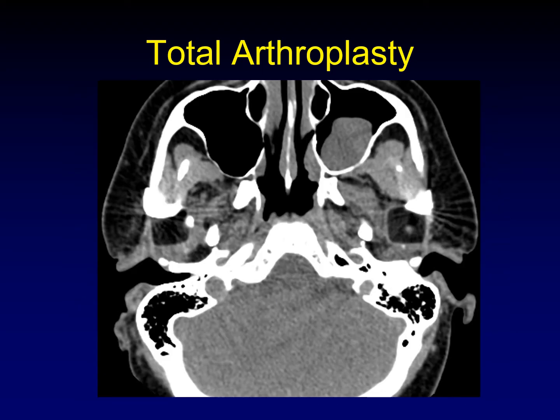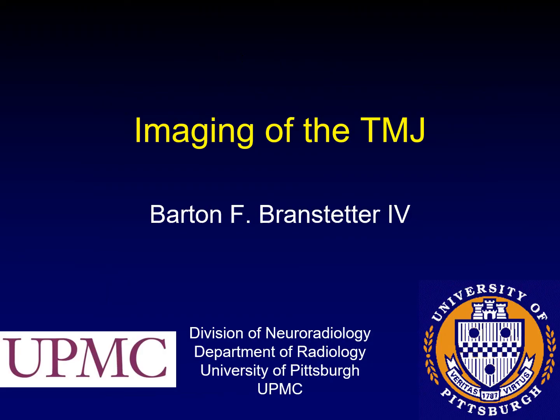Here's what it looks like in the axial plane, with soft tissue windows to emphasize the discs themselves. You can see they are square or rectangular when cut in this cross section, and they are of very low-density material. That concludes our review of imaging of the temporomandibular joint.